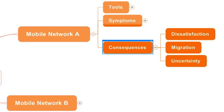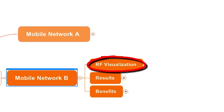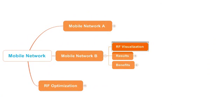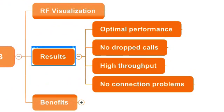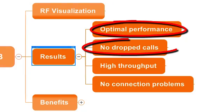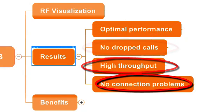When it comes to Network B, they face much of the same technical challenges, but in sharp contrast they rely on advanced RF visualization to speed up their decision-making process. Their RF optimization gives better results and their network operates at full speed. It's performing optimally — it cuts down on dropped calls, it has high throughput and no connection problems.